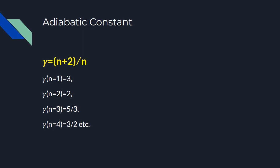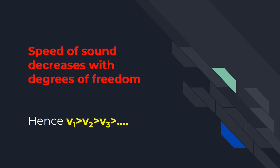As the degree of freedom increases, if we go back to the previous equation, we can see as gamma decreases, the speed of sound also decreases. Hence we can say that the speed of sound decreases as the degree of freedom of the gas molecule increases. So we can say v1 > v2 > v3 and so on. Now let's come back to the question.